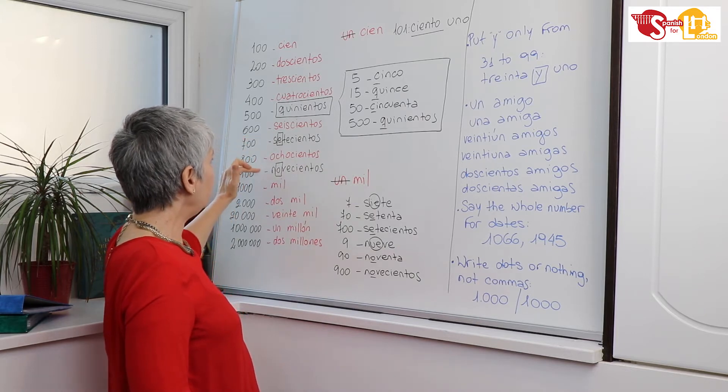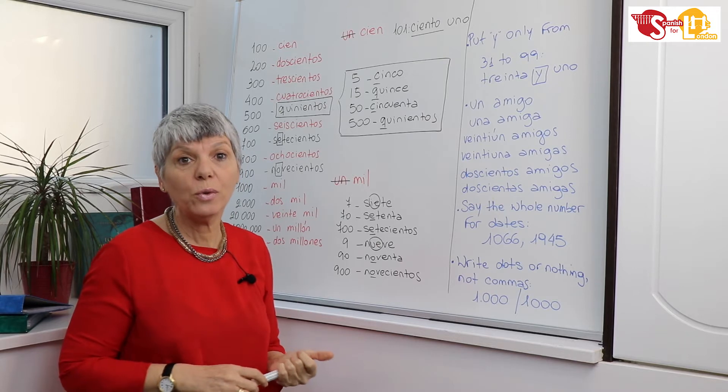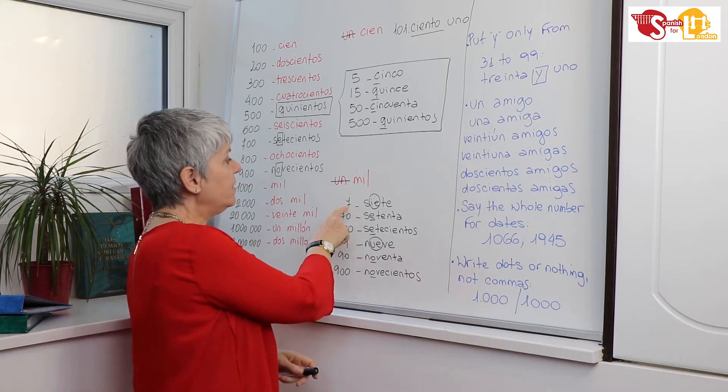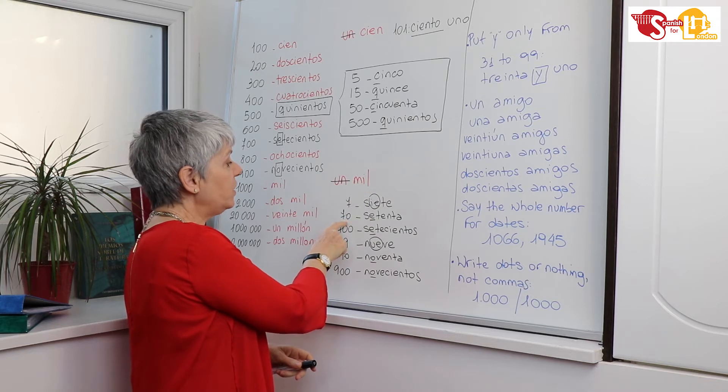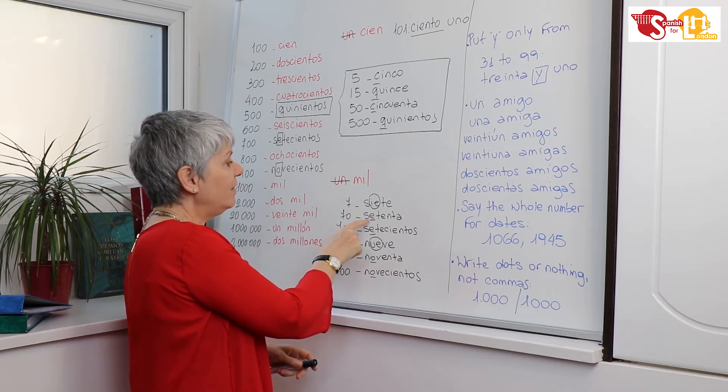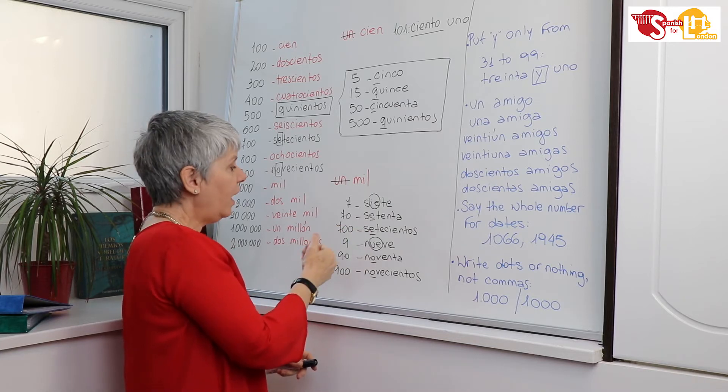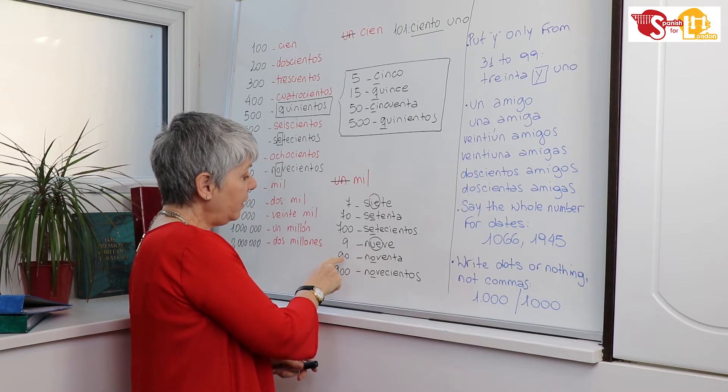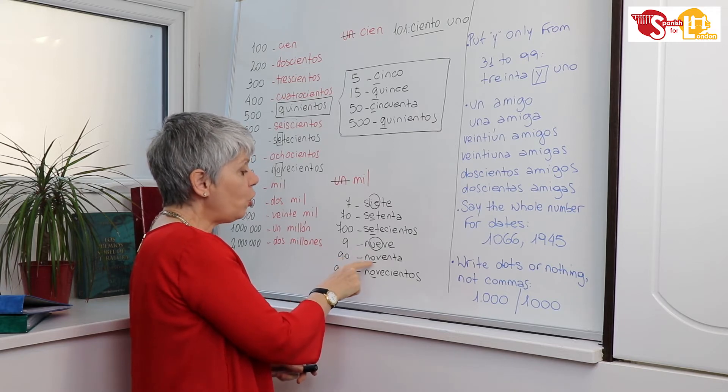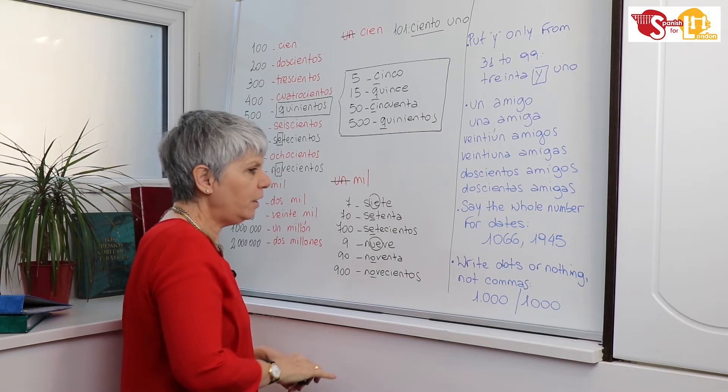And then setecientos and novecientos are slightly irregular. They only change one letter. Do you see? Seven, siete, but seventy and seven hundred: setenta, setecientos. And then nueve (nine), but ninety and nine hundred: noventa, novecientos.